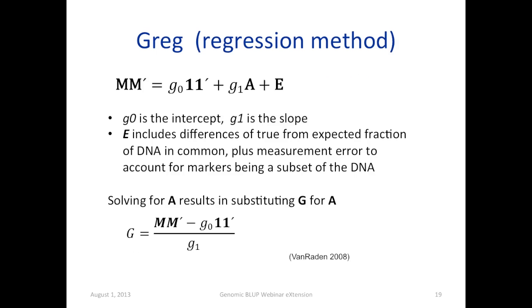The regression method, I call this matrix as Greg. So M prime is the dependent variable, and A matrix is the independent variable. Here, the objective is to calculate the intercept and the slope. So we want to actually get the solution for A using the markers as the dependent variable. The error includes the difference of true from expected fraction of DNA in common, plus the measurement error to account for markers being a subset of the total DNA.